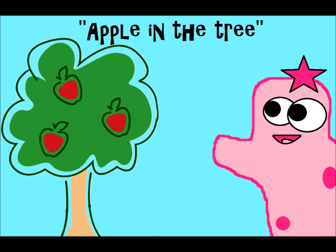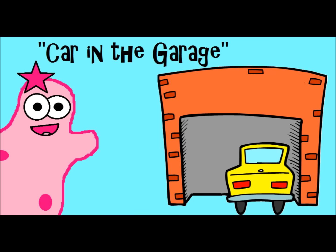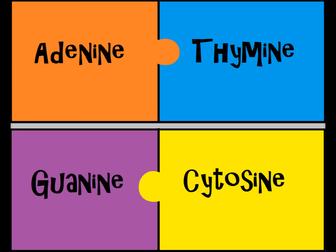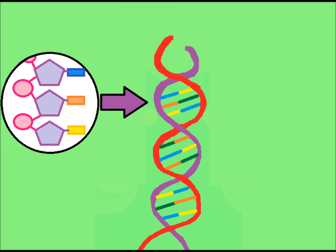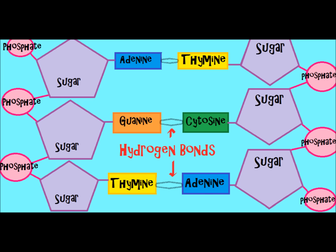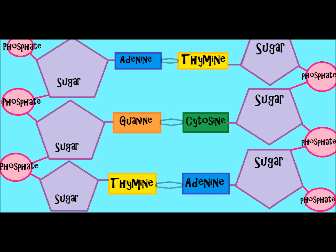Here's a way to remember base pairing: 'Apples on the tree' tells you that A for apples and T for tree — A and T always go together. And 'cars in the garage' helps you remember that C always pairs with G. DNA has two strands, with nucleotides running up each side. The bases pair in the middle, held together by hydrogen bonds. The DNA is also twisted into what we call a double helix shape, with the bases in the center and the sugar and phosphate making up the sides.